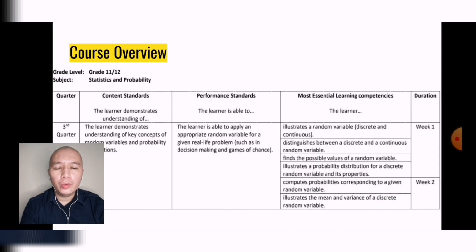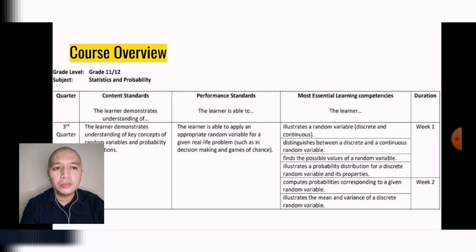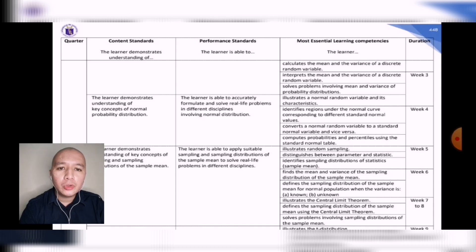To give you a quick overview, these are the most essential learning competencies from DepEd's manuals. Here are some of the expectations for the subject of Statistics and Probability. For the first week, we will be covering random variables and probability. As a student, you must be able to illustrate a random variable, distinguish between a discrete and continuous random variable, find the possible values of a random variable, and illustrate a probability distribution for a discrete random variable. We will also cover a normal probability distribution, sampling solutions, and sample mean.